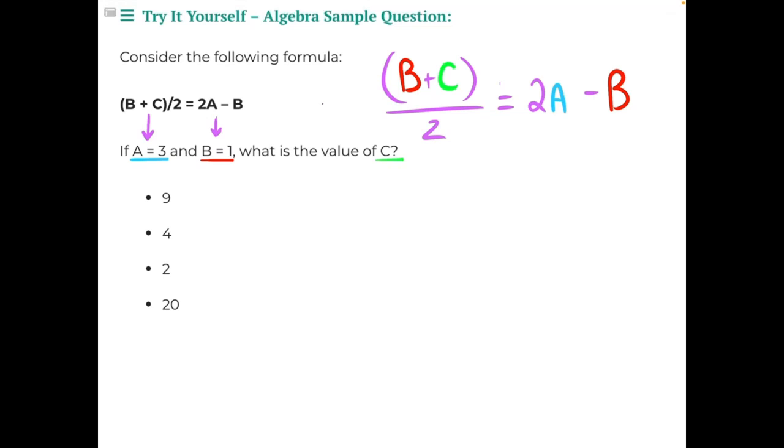We know from left to right b is going to equal 1, so we'll have 1 plus c divided by 2 equals 2 times 3, because a equals 3, minus b equals 1.